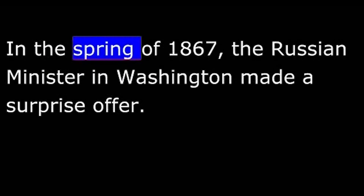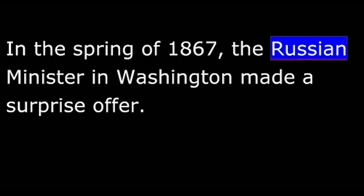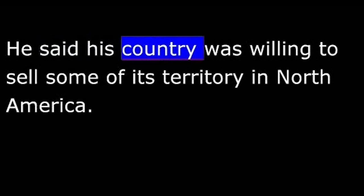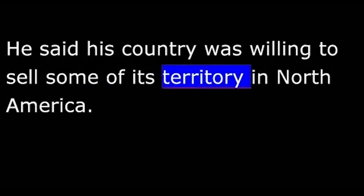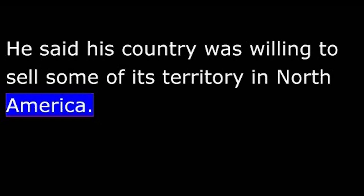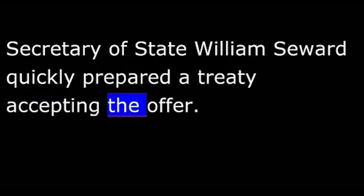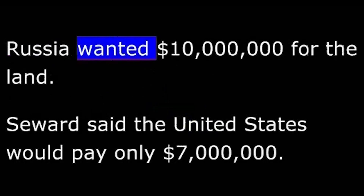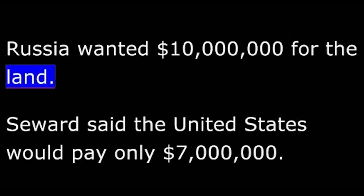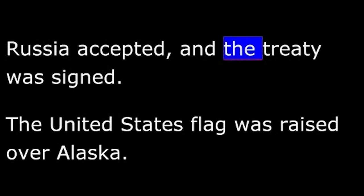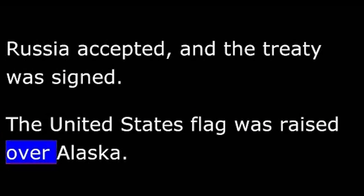In the spring of 1867, the Russian minister in Washington made a surprise offer. He said his country was willing to sell some of its territory in North America. Secretary of State William Seward quickly prepared a treaty accepting the offer. Russia wanted $10 million for the land. Seward said the United States would pay only $7 million. Russia accepted and the treaty was signed. The United States flag was raised over Alaska.